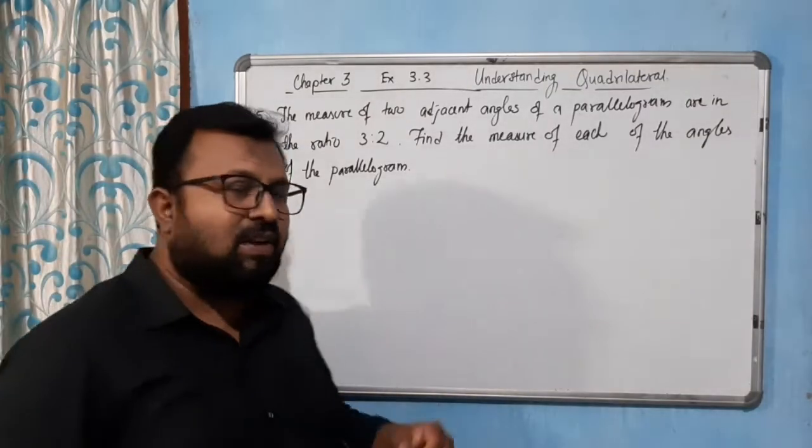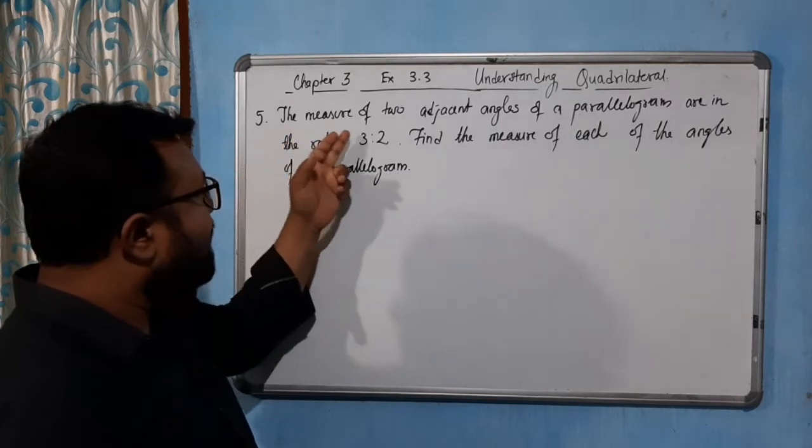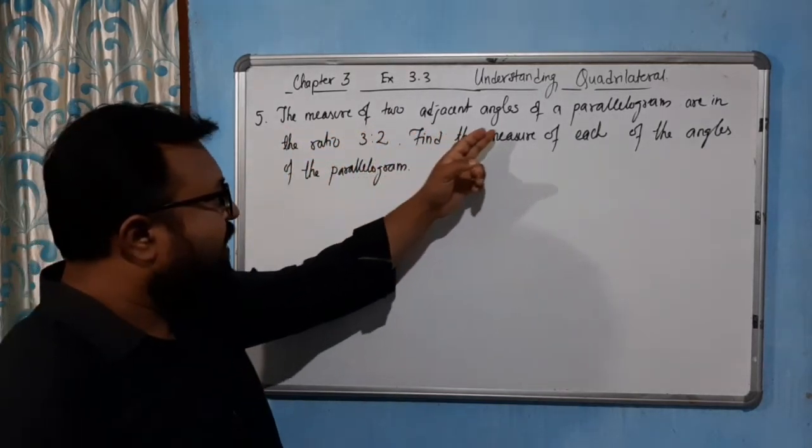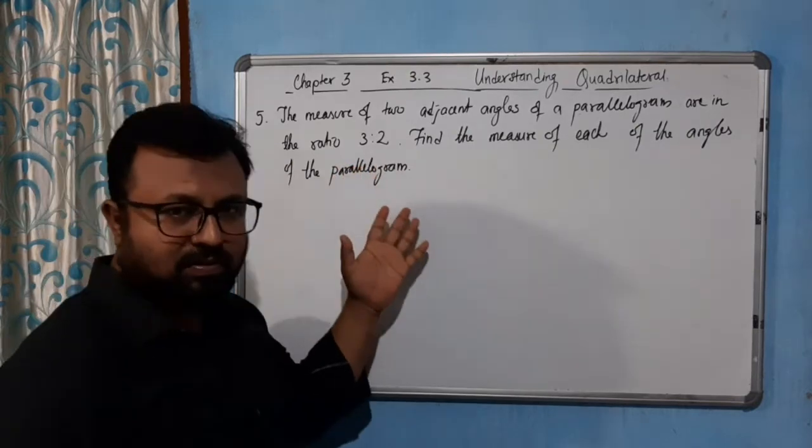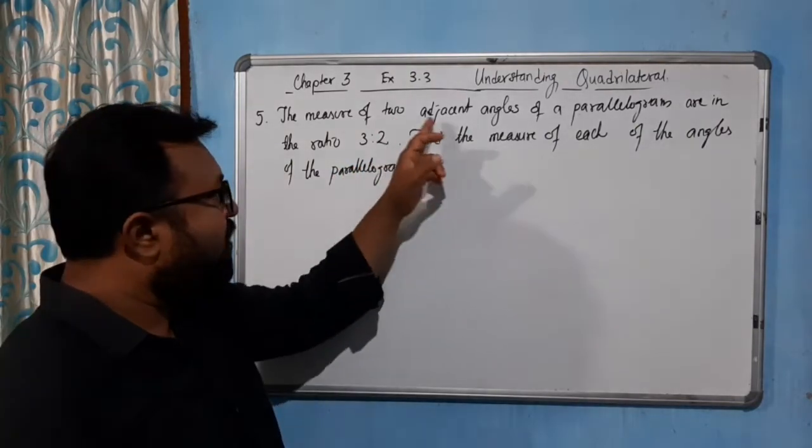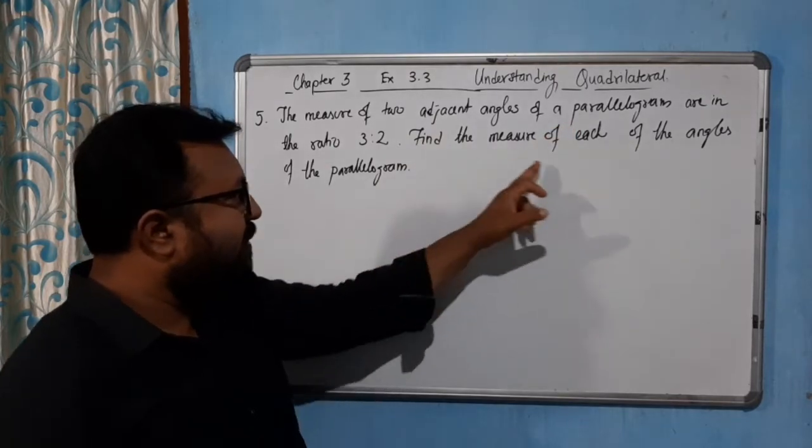Hello students, now come to the next question. Question number five: The measure of two adjacent angles of a parallelogram are in the ratio 3 is to 2. Find the measure of each of the angles of the parallelogram.